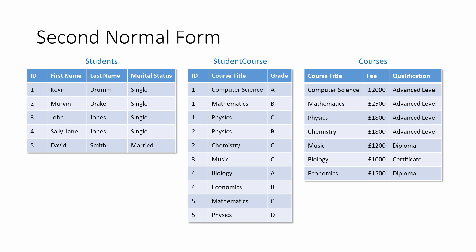The Student-Course table is about which students enrolled on which courses and how well each student performed. It only contains information about each student-course combination. The combination of ID and course title is unique in the Student-Course table, so this table has a composite primary key. Every non-key attribute in this table — namely the grade — is about the student-course combination. The grade is functionally dependent on the primary key, and only the primary key. There are no partial dependencies here.